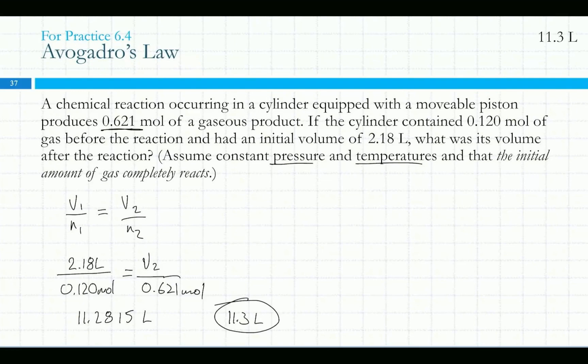We go from about 0.12 to 0.621 — that's roughly five times the number of moles, so about five times the volume. This is why it's important to also remember the relationship between these things: if I go from 0.1 to 0.6 moles, I should see the volume increase because I increased the amount of gas. So if your answer is smaller when the number of moles increases, you should go back and check your calculations.